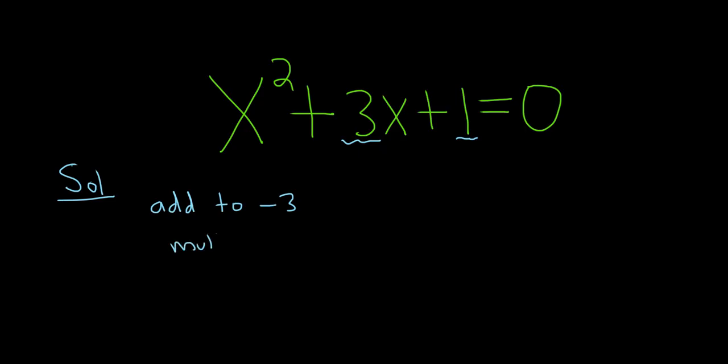So multiply to 1. I should point out that if you have a number in front of the x squared, like say you have 3x² + 6x + 7 = 0, then you would just divide everything by 3. So in this problem here, I purposely put a 1 here just to make it a little bit easier.